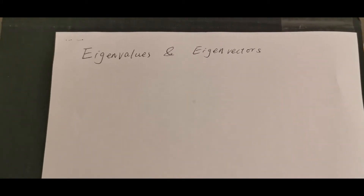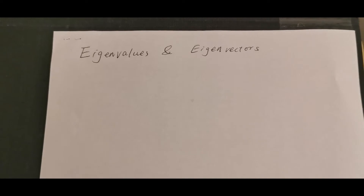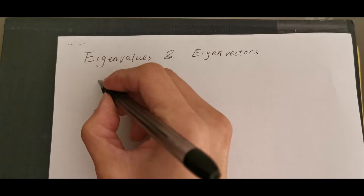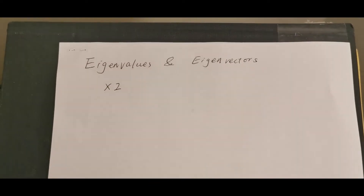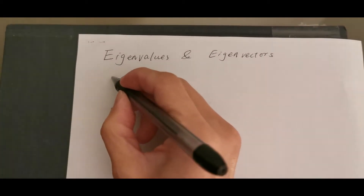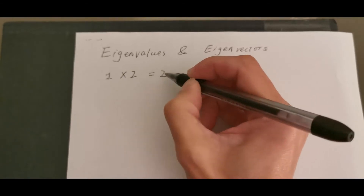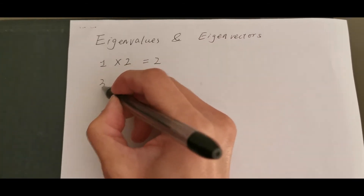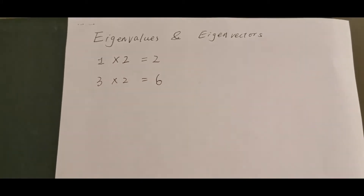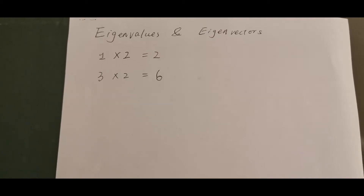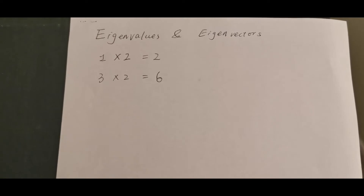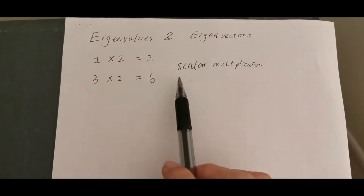Maybe we should start from the very beginning, the simplest idea of doing multiplication. Consider the simplest doubling operation: multiply by 2. If we have a number 1 and multiply by 2, that gives us 2. Another number 3 multiplied by 2 is 6. These are scalar multiplied by scalar operations — simple, but very limited. We call this scalar multiplication.